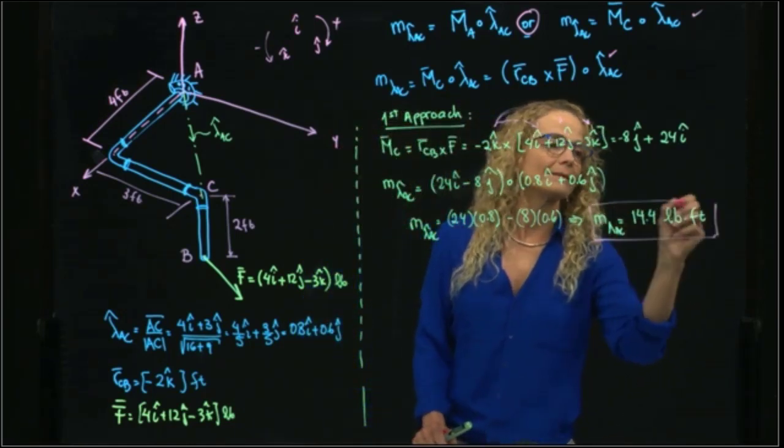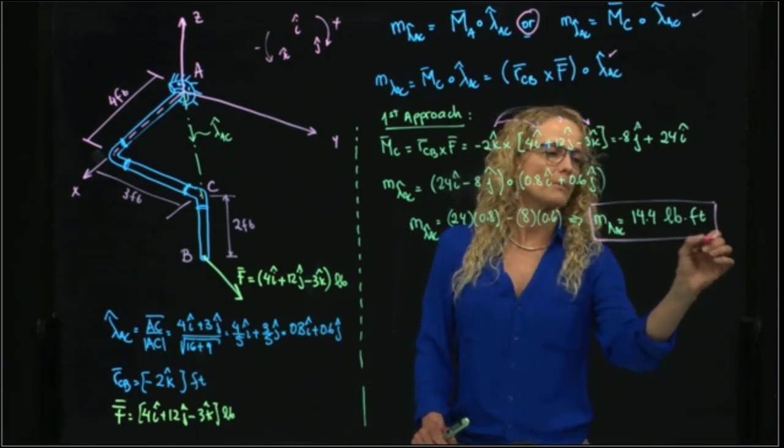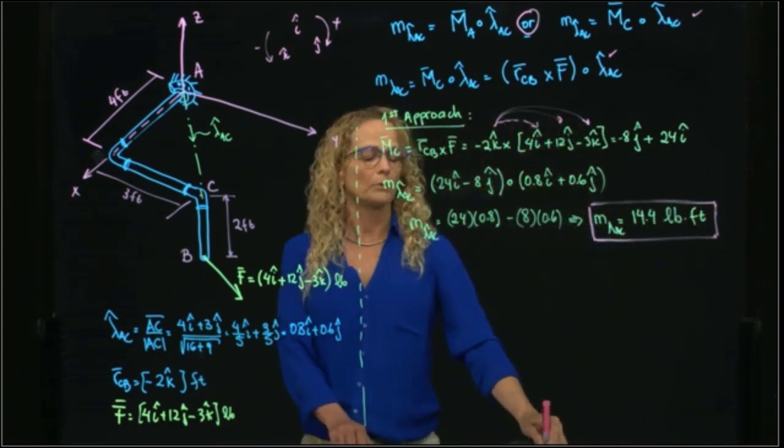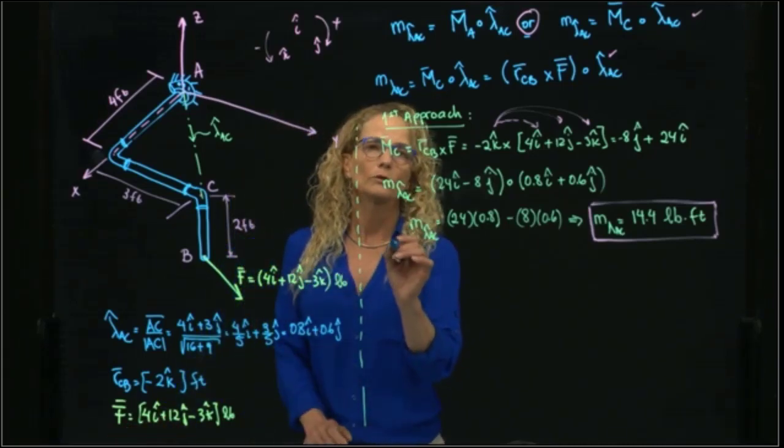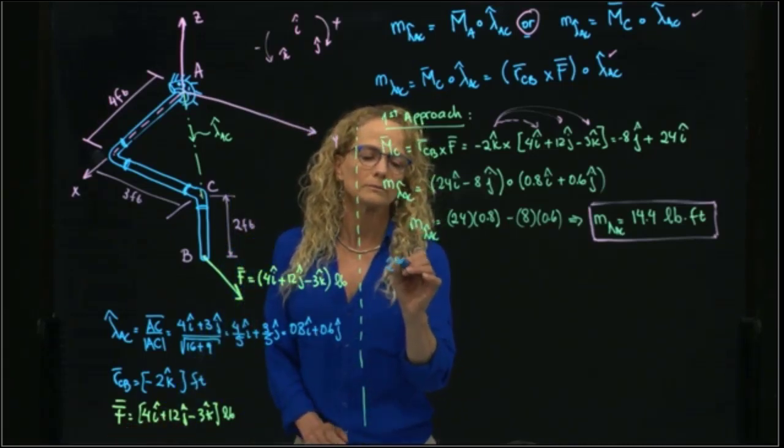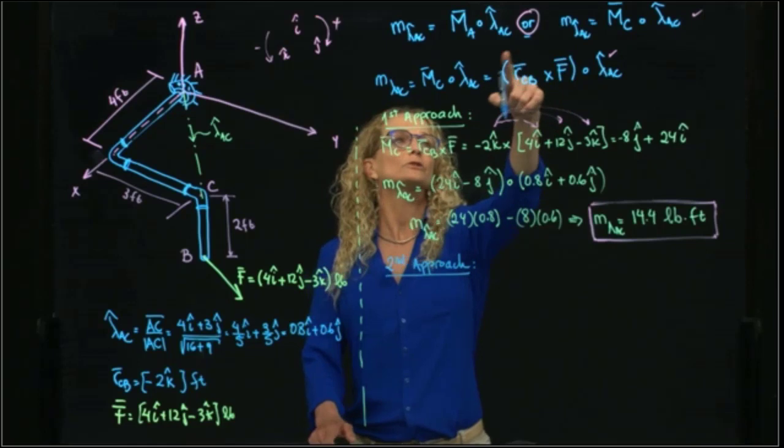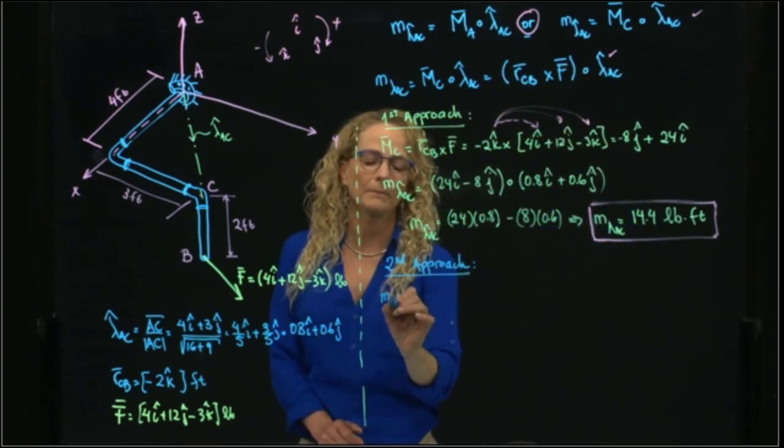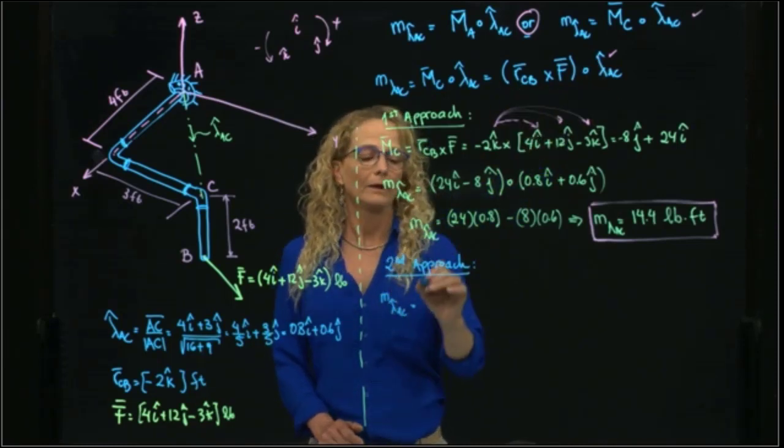As I said, I will do two different approaches. That was the first approach and we got a result. Let's do the second approach. The second approach, I will do the multiplication as a unit. So what I will do is write that my M_AC will be equal to this multiplication.